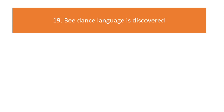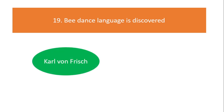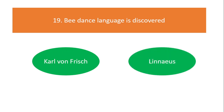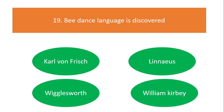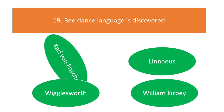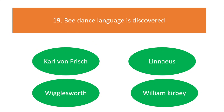Bee dance language is discovered by: Karl von Frisch, Linnaeus, Wigglesworth, or William Kirby? The answer is Karl von Frisch.